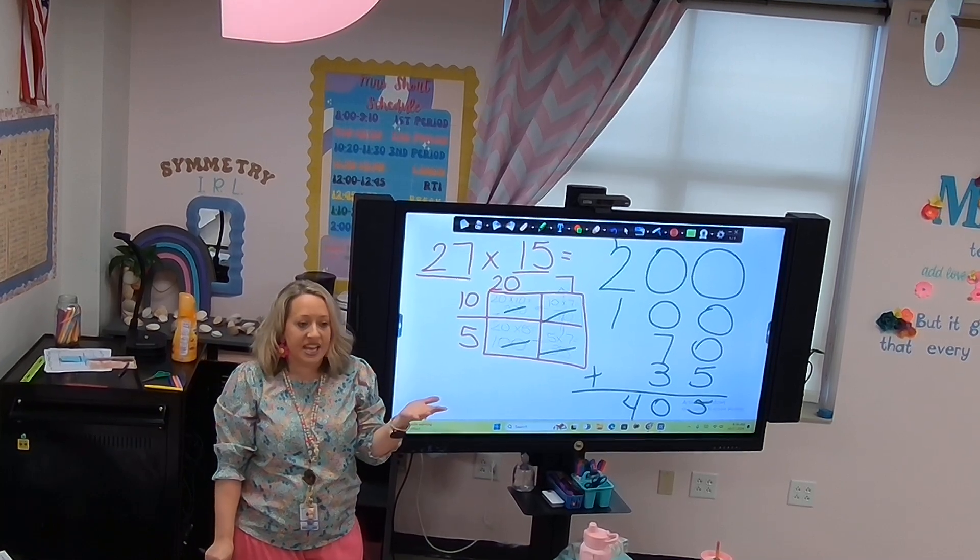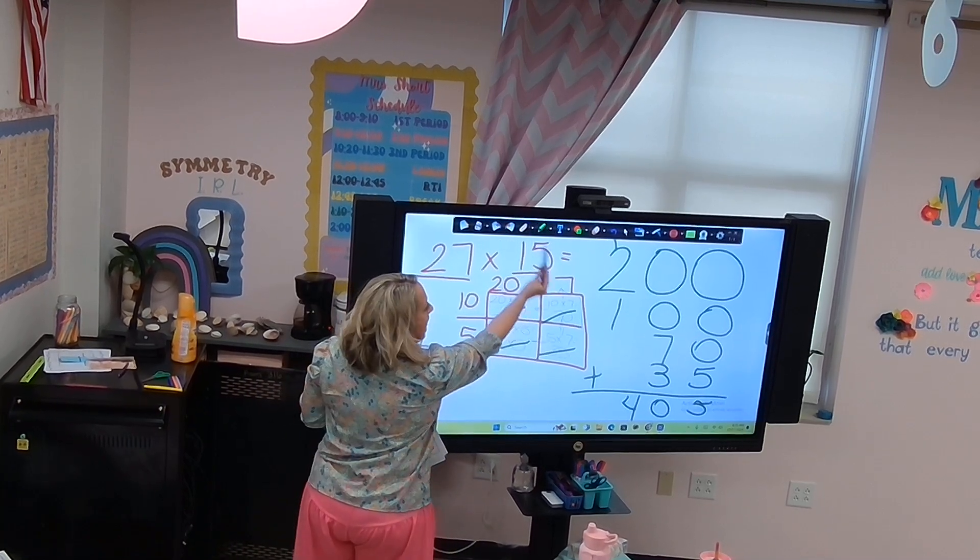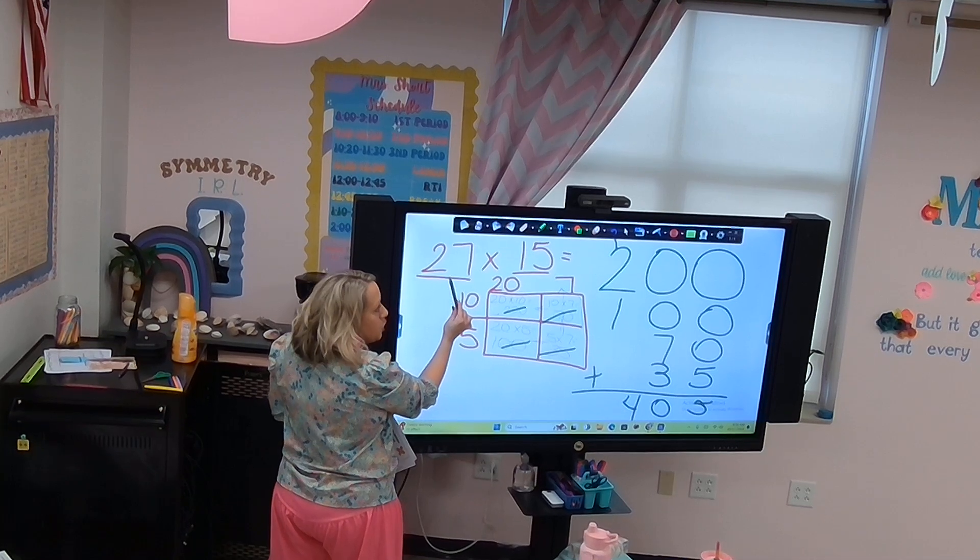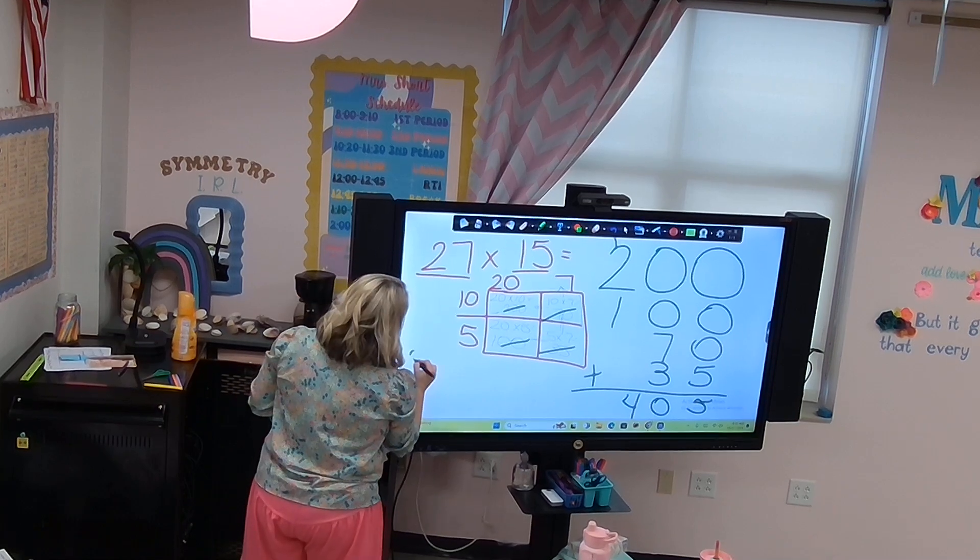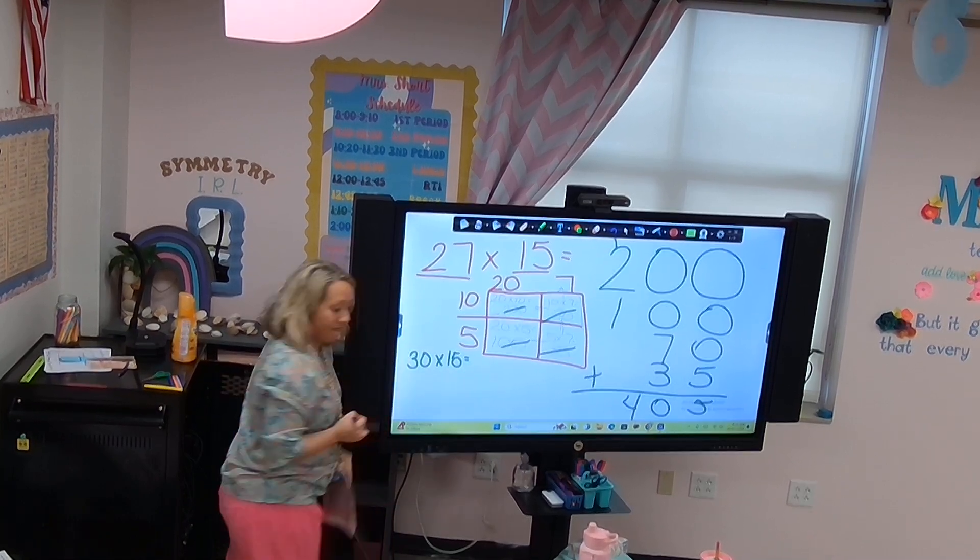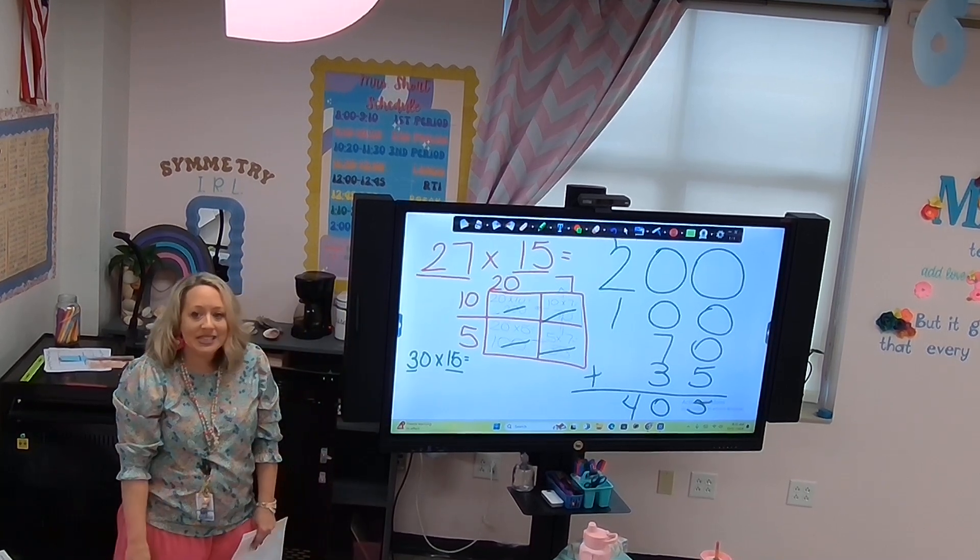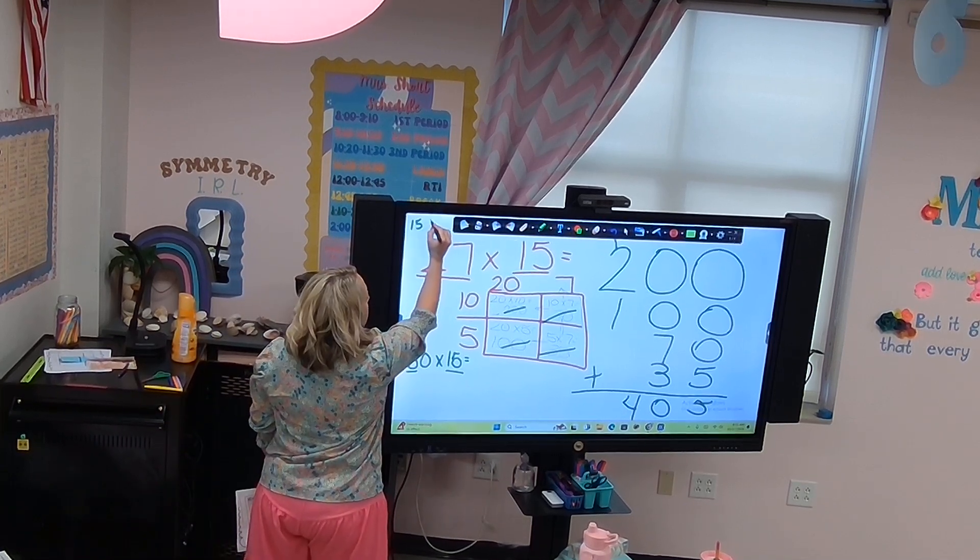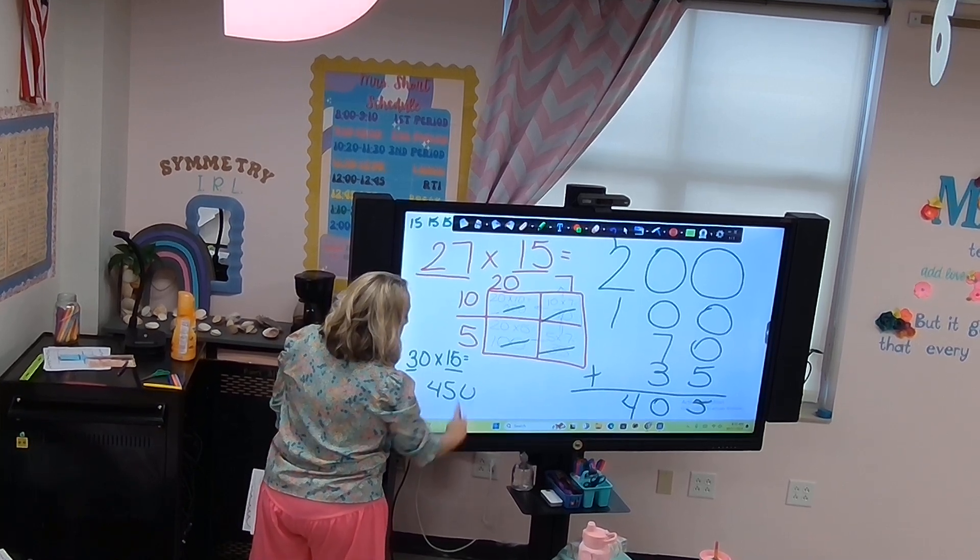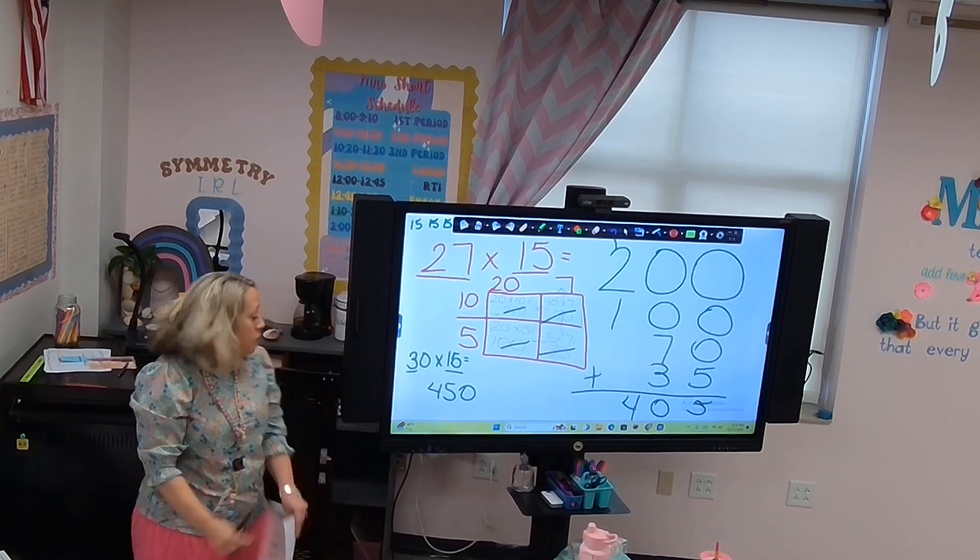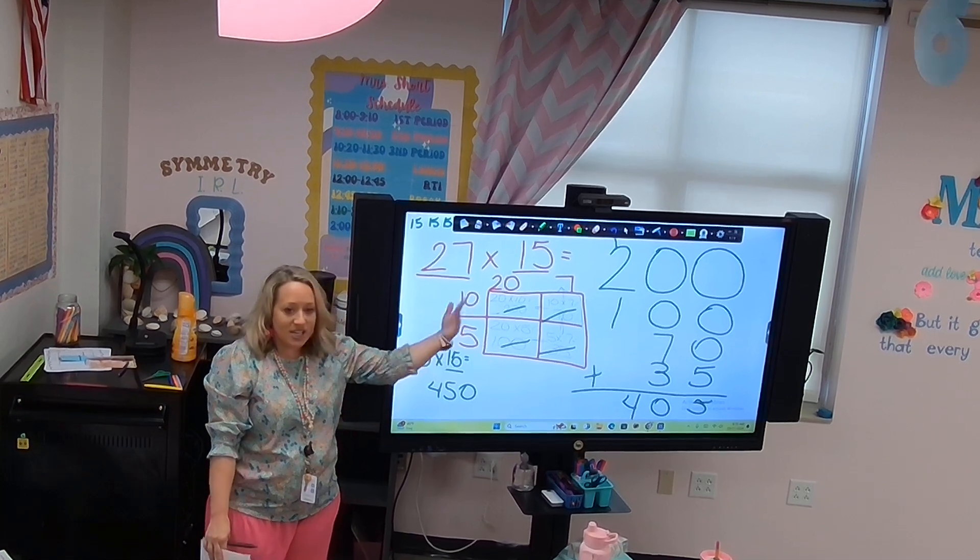What do compatible numbers end in? It's two different numbers that they can end in. 5 and 0. This one's already compatible. What would be a compatible number that's close to this? You can do 30 or you can do 25. Let's do 30 because that's easier. If we do 30 times 15. What is 3 times 15? That's 45. And then we can stick our zero on there. Is that close? Yeah. If you come up with like 4,000 or something, that's when you need to be worried.